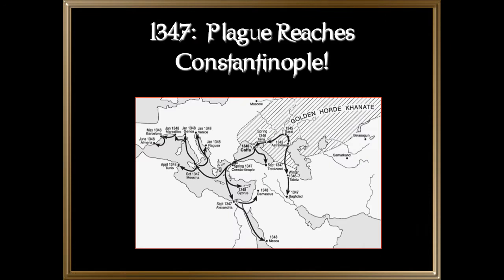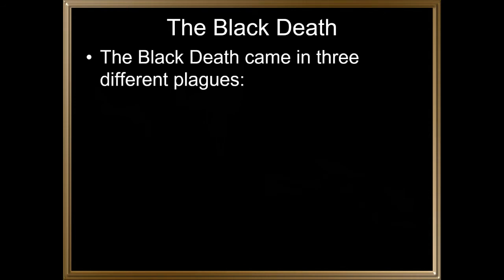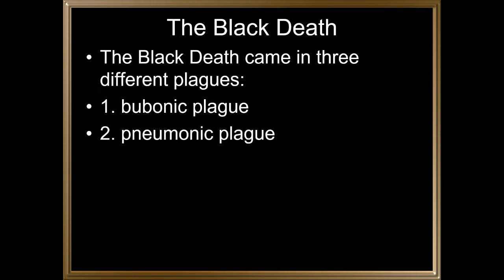In 1347, the plague reached Constantinople first. Symptoms: buboes would appear, and then septicemia formed, which had almost a 100% mortality rate. The Black Death came in three different forms: the bubonic plague, the pneumonic plague, and the septicemic plague. People in the Middle Ages knew how to fight disease — they knew how to isolate people, much like social distancing and quarantining today. But when three different plagues with three different types of symptoms hit at once, it started to look like people were dying for no reason at all.